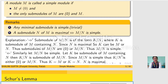Conversely, assume that M mod N is a simple R-module. We want to prove that N is a maximal submodule of M. Since M mod N is simple, it is nonzero, so N is not M. Let P be any submodule of M containing N. Then P mod N is a submodule of M mod N. But M mod N is simple, so P mod N can be 0 or M mod N, and thus P can be N or M. Thus N is a maximal submodule.